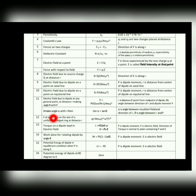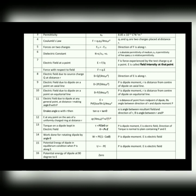When the electric field makes an angle alpha with r, then tan(α) = tan(θ)/2, where alpha is the angle between the resultant field and the direction of r, and theta is the angle between r and p — where r is the position vector of the point where electric field is calculated and p is the dipole moment.